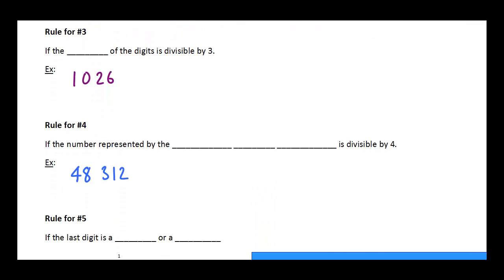To find out if number 3 is a factor, this one's a little bit strange. What we do is we say if the sum of the digits is divisible by 3, then it is a factor. So what we mean by that is we've got an example here, 1,026. We're going to find the sum of those digits. So we'll take each of those individual digits and add them up.